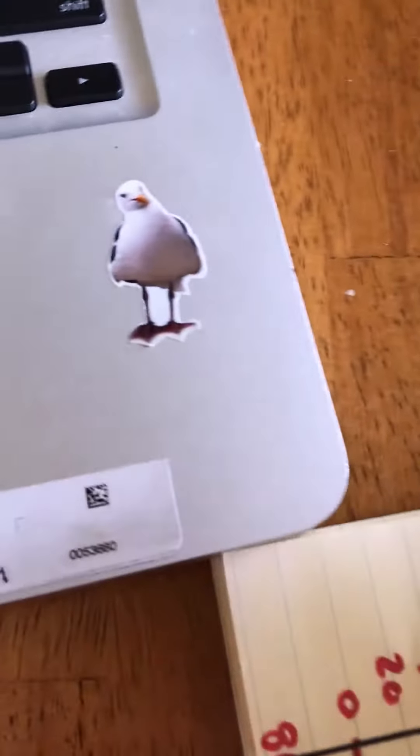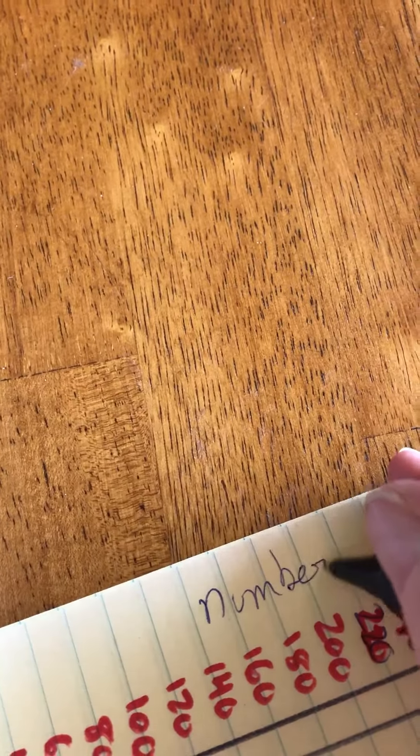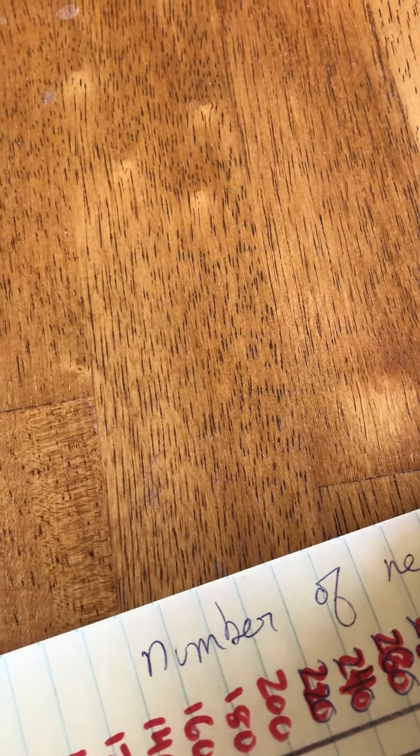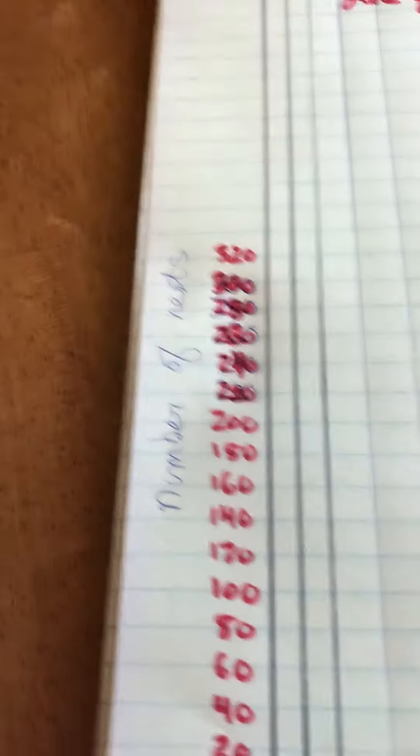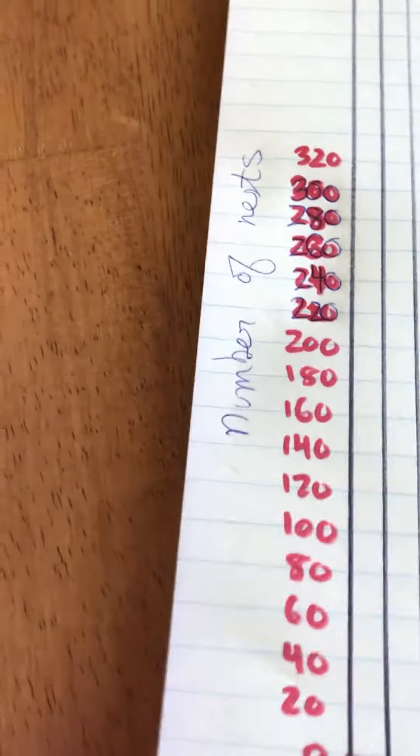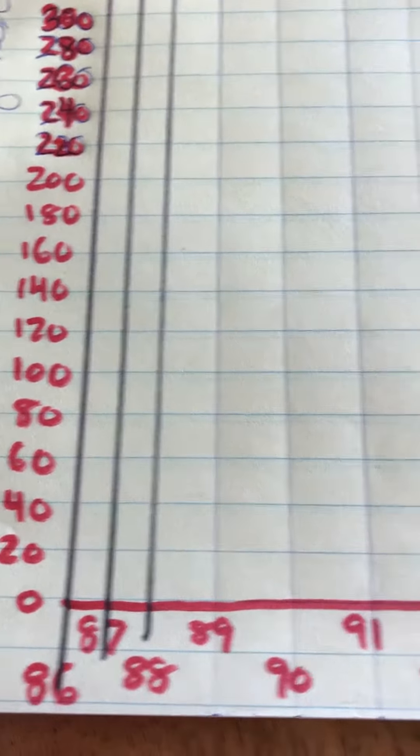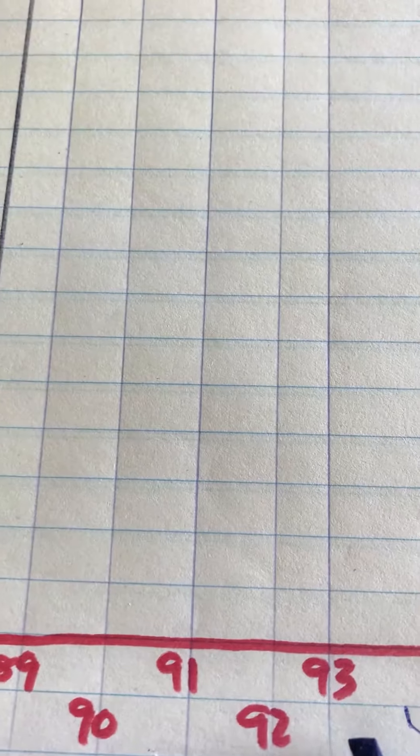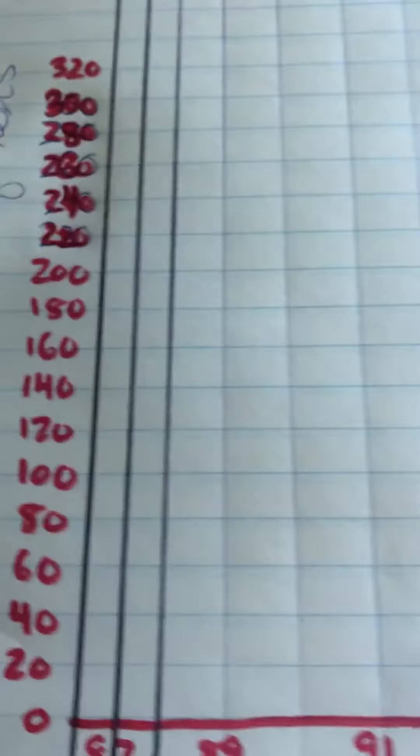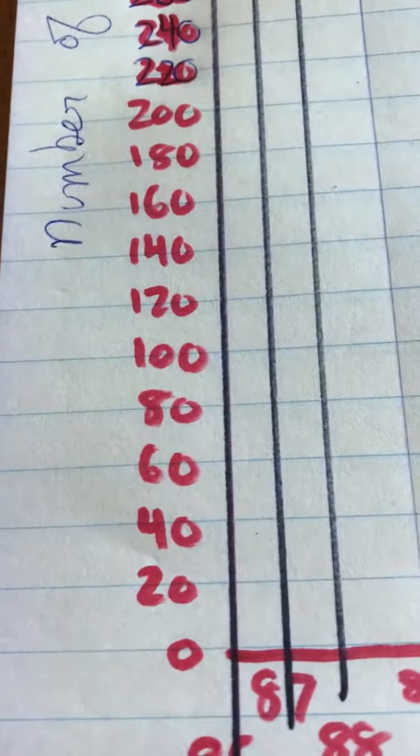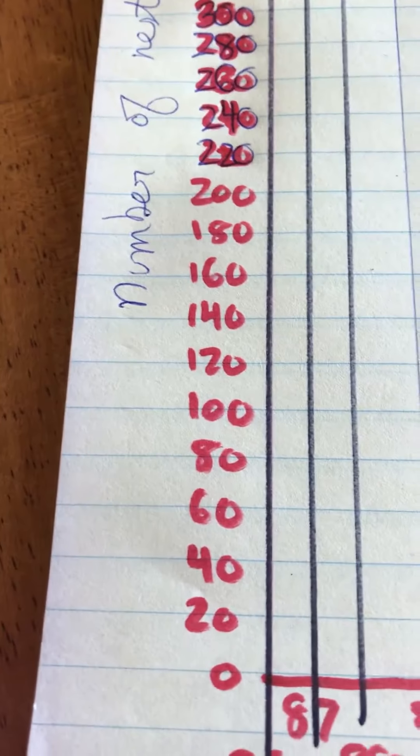On the side here, we're going to write number of nests. And on the bottom, of course, are the years. So I started it out with 1986. And we went through 1983. You can keep going. You might need to get a second piece of paper over here to continue all those years. But with a line graph, all we need to do is put a point on.